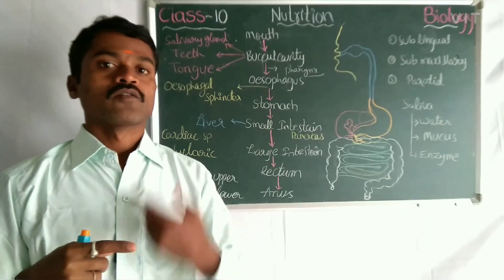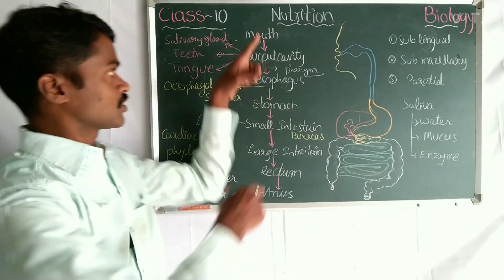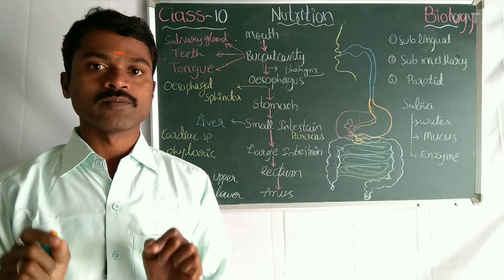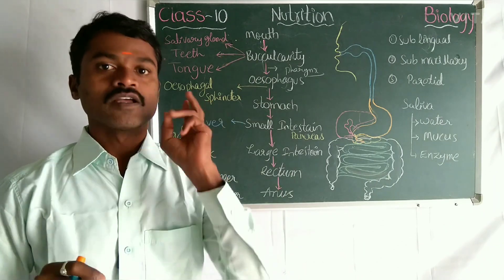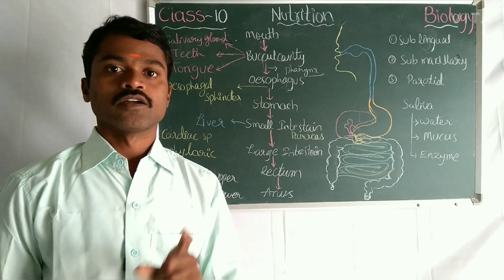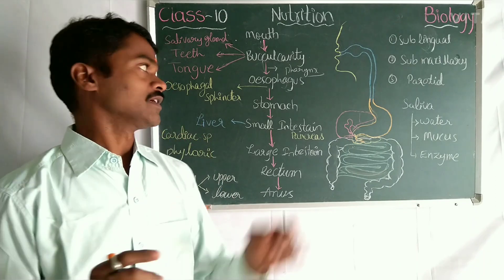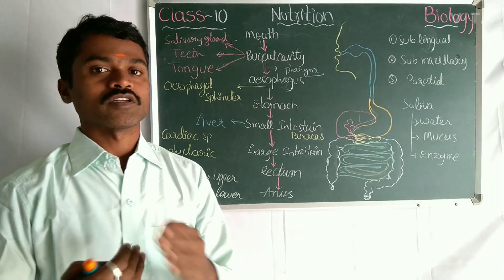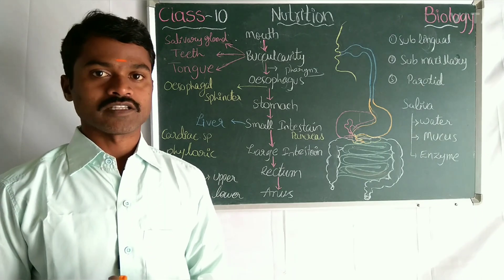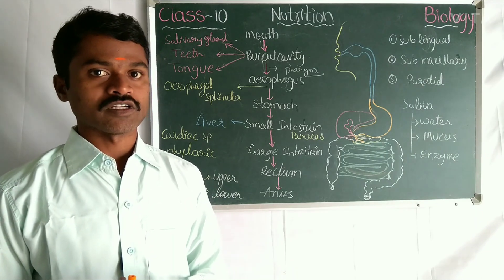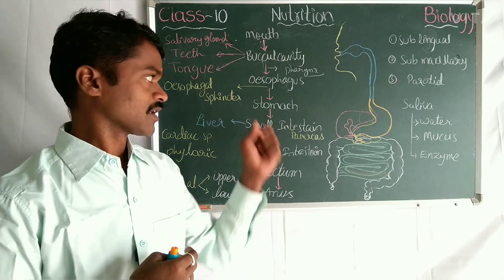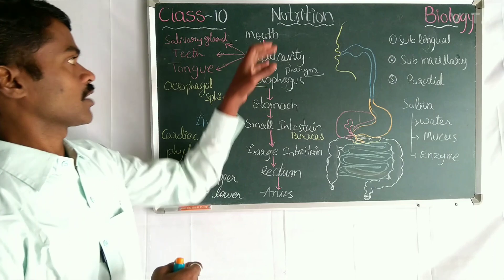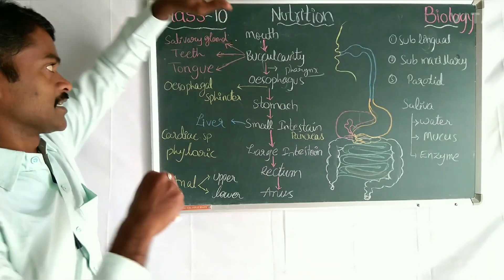The oesophagus is the food pipe. From the mouth to the anus, the total length of the gut — the alimentary canal or digestive system — is nine meters. The oesophagus has a length of nearly 26 to 29 centimeters. Now let's come to each part one by one.